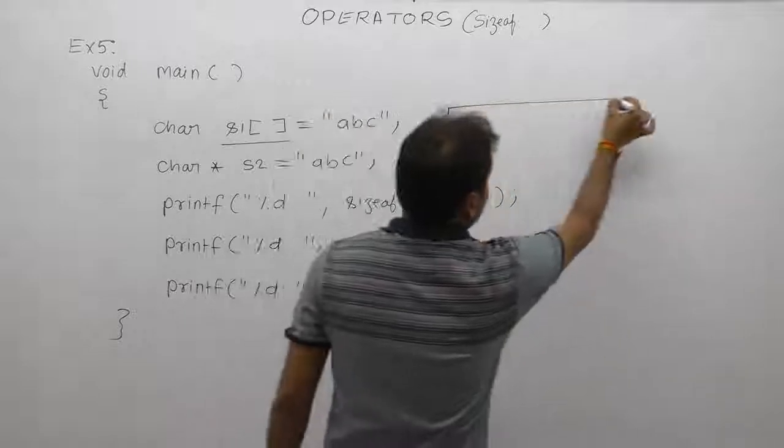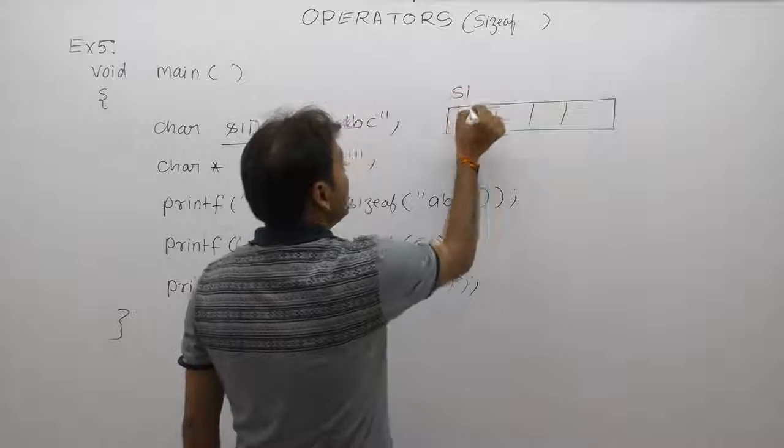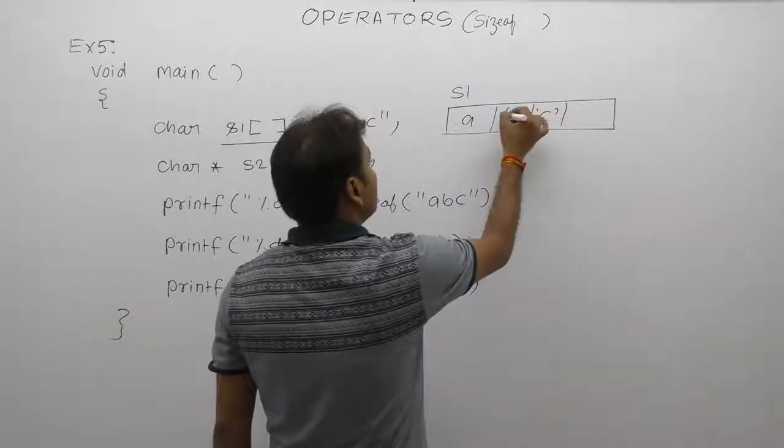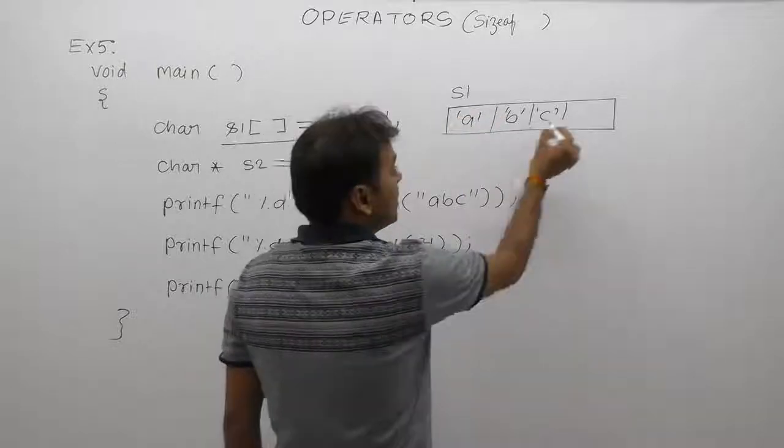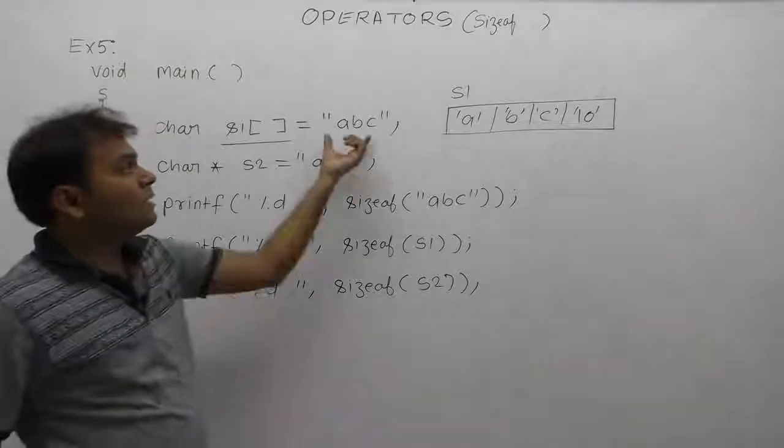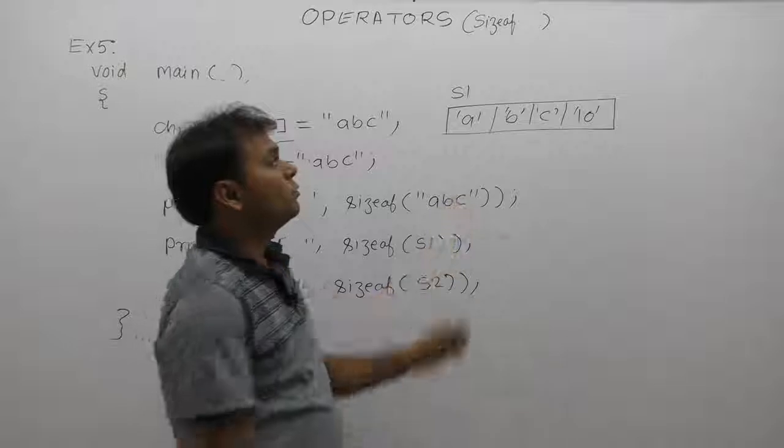How many bytes are allocated for ABC characters in the form of their ASCII values and null character? Physically only three bytes are used, but s1 occupies 4 bytes. Therefore memory allocation is 4 bytes, size of s1 is 4.